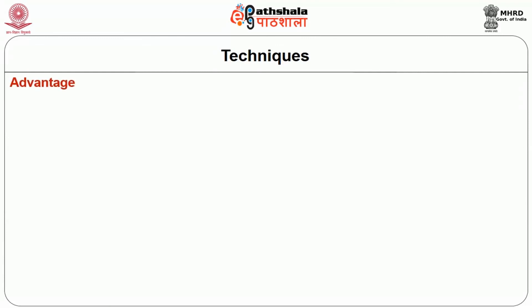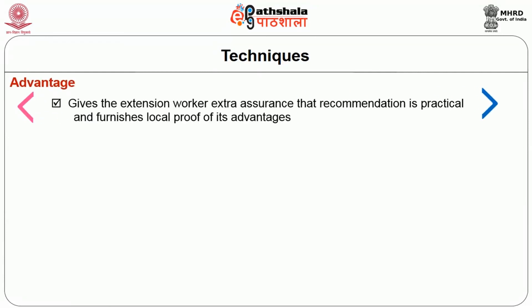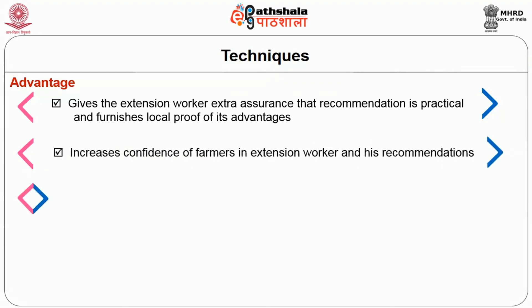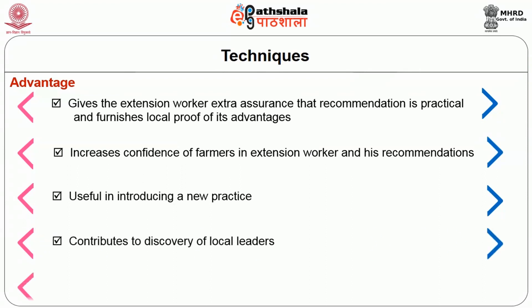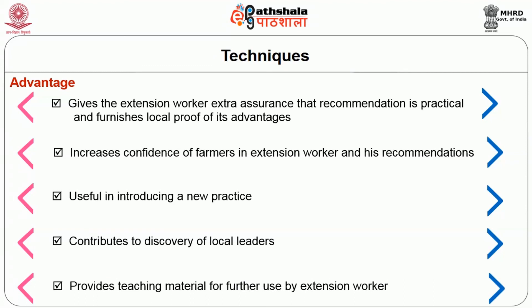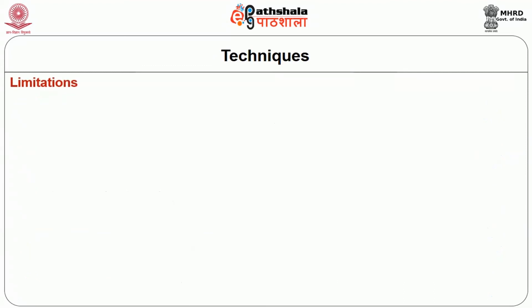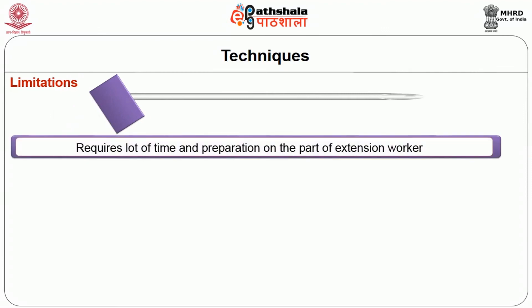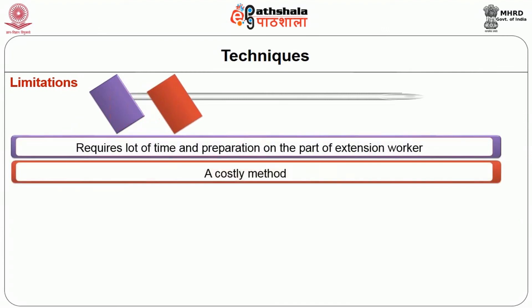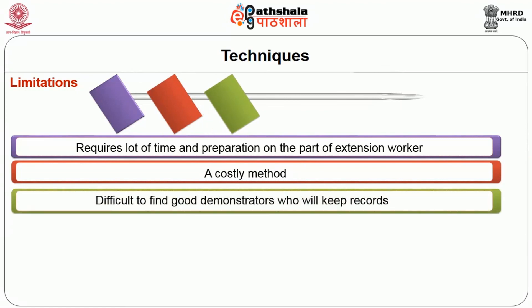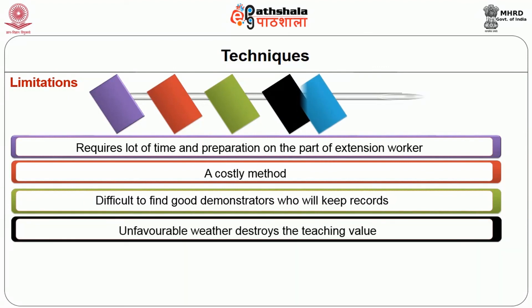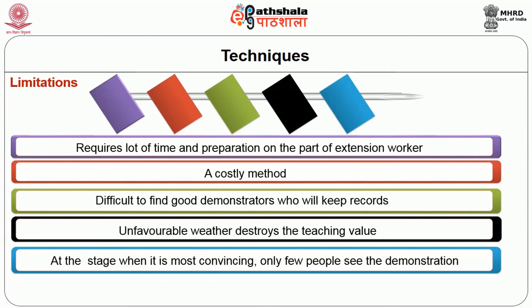The advantages of result demonstrations are: gives the extension worker extra assurance that the recommendation is practical and furnishes local proof of its advantages; increases confidence of farmers in the extension worker and his recommendations; is useful in introducing a new practice; contributes to discovery of local leaders; and provides teaching material for further use by extension workers. The limitations are: requires a lot of time and preparation; it is a costly method; difficult to find good demonstrators who will keep records; unfavorable weather destroys the teaching value; and only few people will see the demonstration.